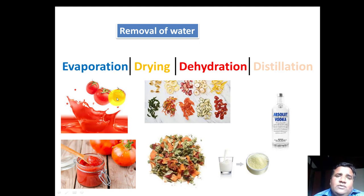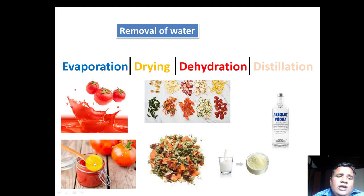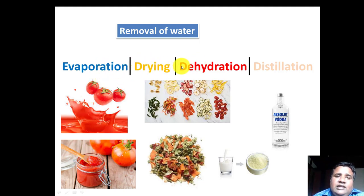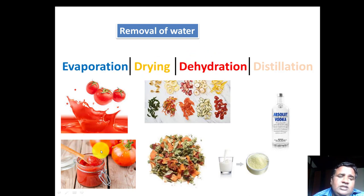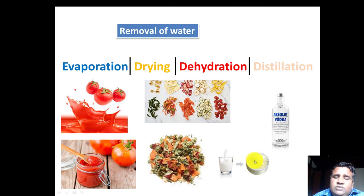After heating or after removal of the moisture content in evaporation, the end product we obtain is also a concentrated liquid — the end product of evaporation is not a solid. In comparison, if we talk about drying and dehydration, the end product is solid. For example, dried vegetables and milk converted into powder — that's why we call it spray dried powder, not evaporated powder.